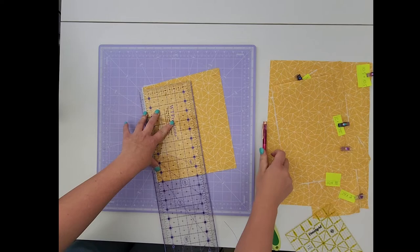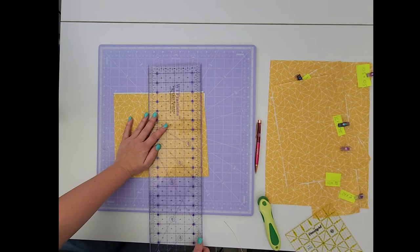Now we need to rotate our fabric again, line up the straight edge that we have already cut, and line that up with the marks that we just drew for our 10 inch and cut along the line.